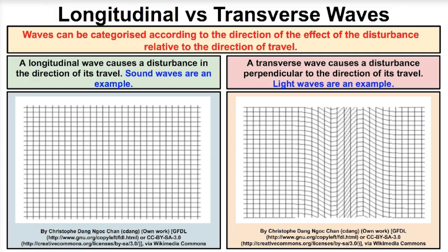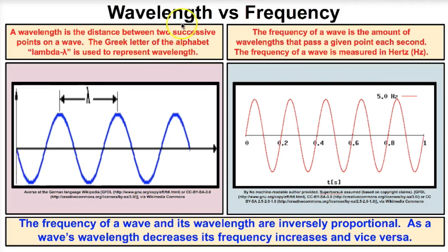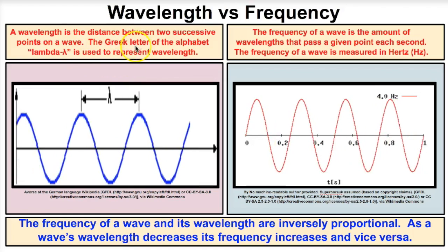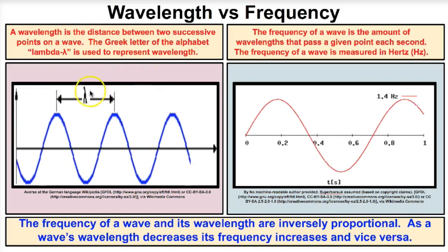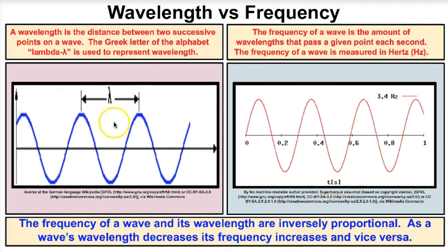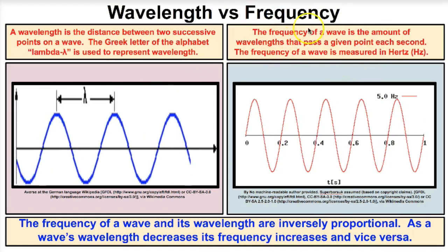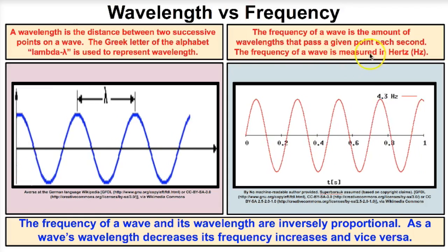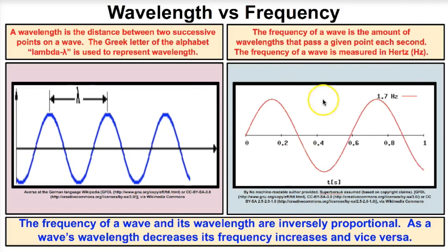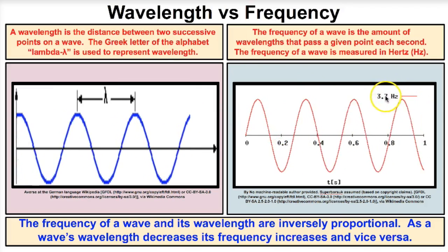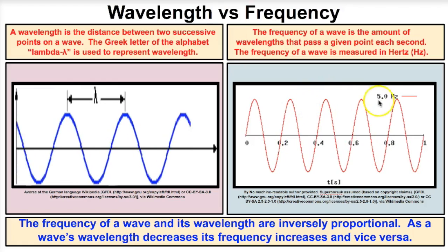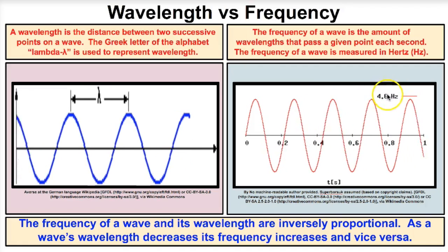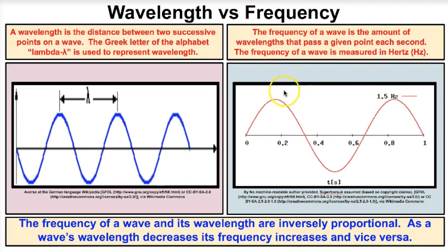Now let's take a look at wavelength versus frequency and understand their relationship. Wavelength is the distance between two successive points on a wave, represented by the Greek letter lambda. Frequency is the amount of wavelengths that pass a point every single second, measured in hertz. As wavelengths get smaller and more bunched up, the frequency increases — wavelength and frequency are inversely proportional.